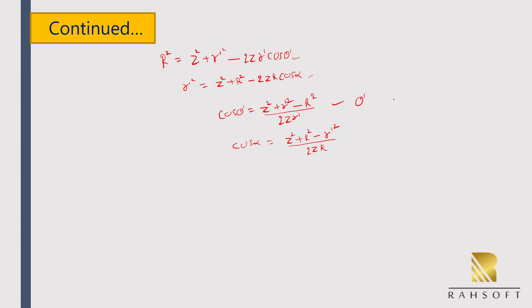Differentiating the cosine rule equation with respect to θ', keeping Z and r' fixed, we get sin θ' dθ' equal to R dR divided by Z r'. When point P is outside the sphere, r varies from (Z − r') to (Z + r'), and θ' varies from 0 to π.